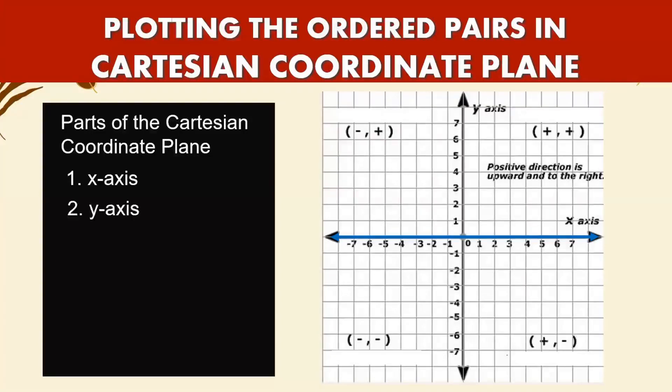The y-axis is the vertical line. Going upward is positive and going downward is negative.